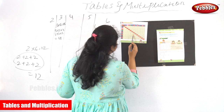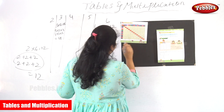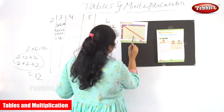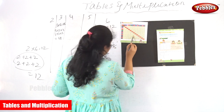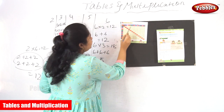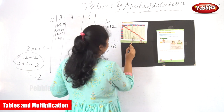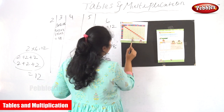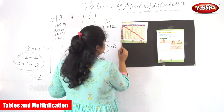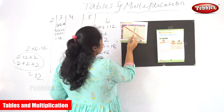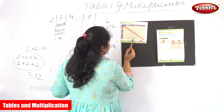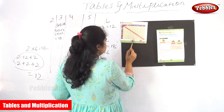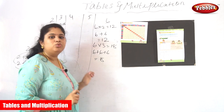7 into 6 is equal to 42. 8 into 6 is equal to 48. 9 into 6 is equal to 54. 10 into 6 is equal to 60. 11 into 6 is equal to 66. 12 into 6 is equal to 72.